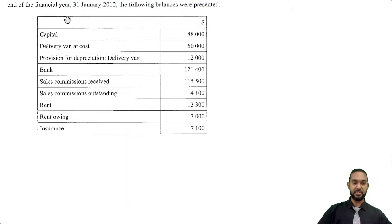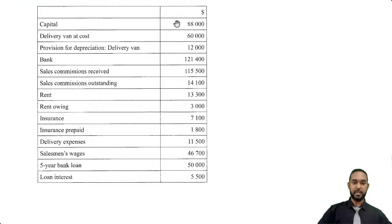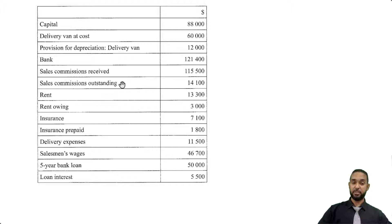Let's take a look at this table. We have capital 88,000, delivery van at cost 68,000, provision for depreciation on the van of 12,000, a bank balance of 121,400, sales commissions received 115,000, and sales commissions outstanding 14,000. Remember what the question told us — all of its revenue comes from a percentage of sales value of the mobile phones. So these are the commissions I was talking about.